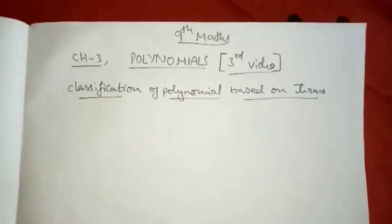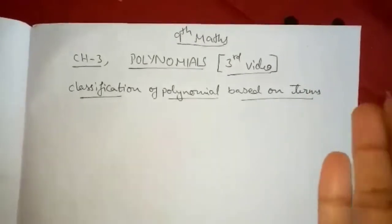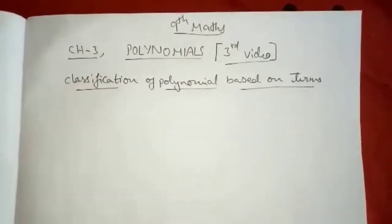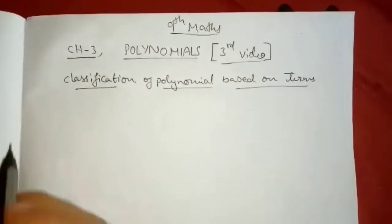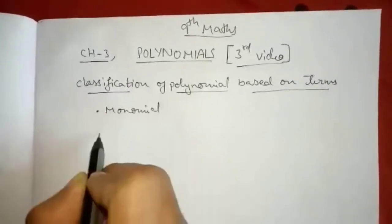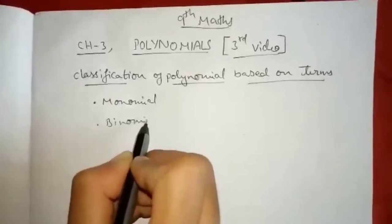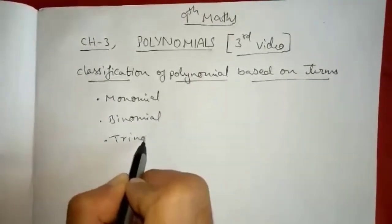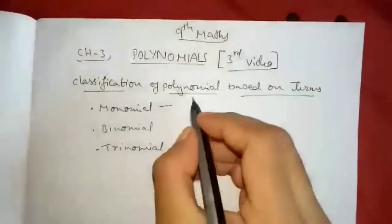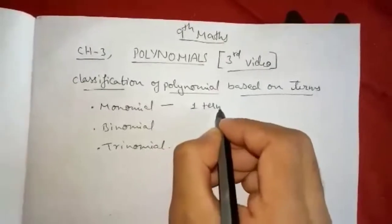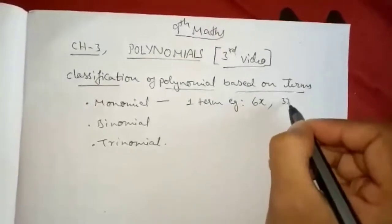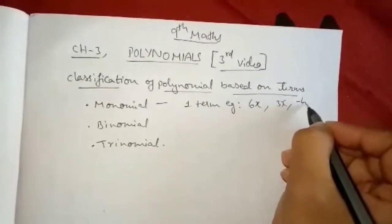More than 3 classifications are there based on terms, but we are studying only 3 in this class. We are interested in only 3 classifications: monomial, binomial, and trinomial. So what is monomial? Monomial means only one term will be there. For example, 6x, 3x, minus 4x, etc.